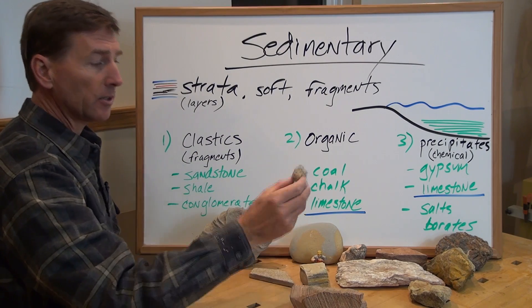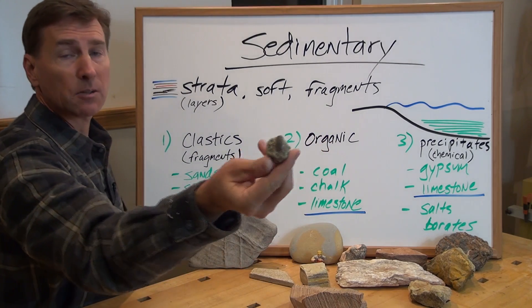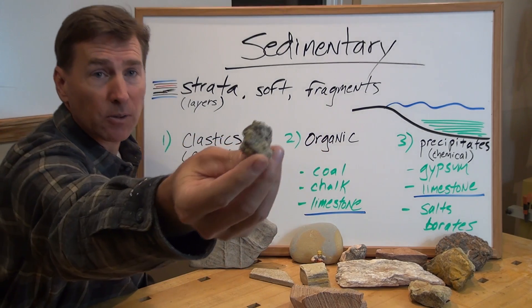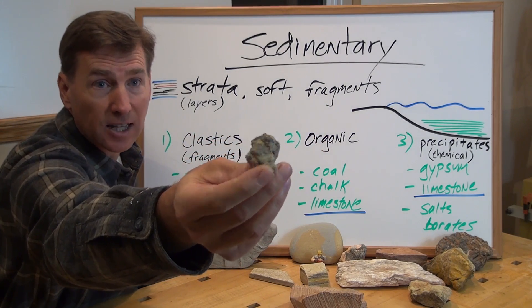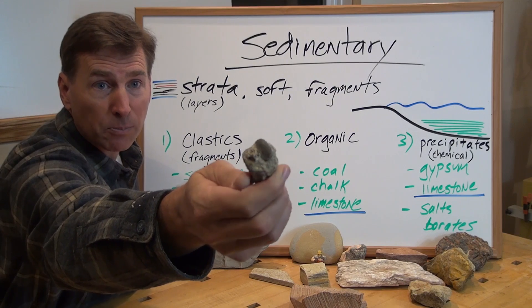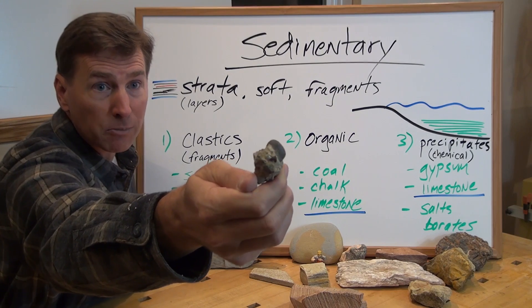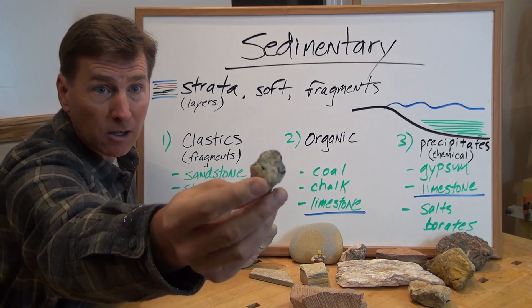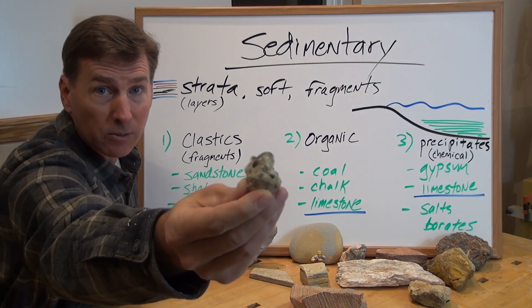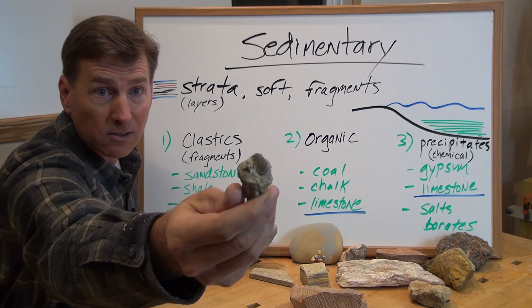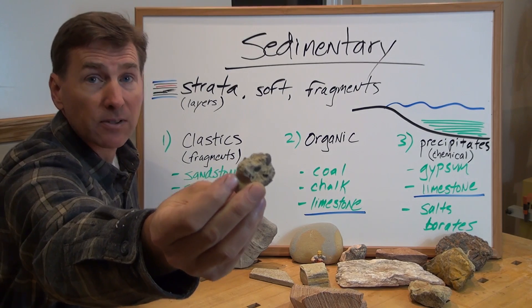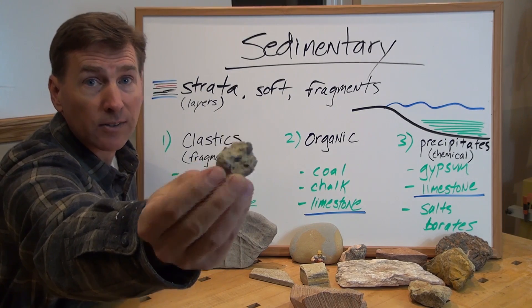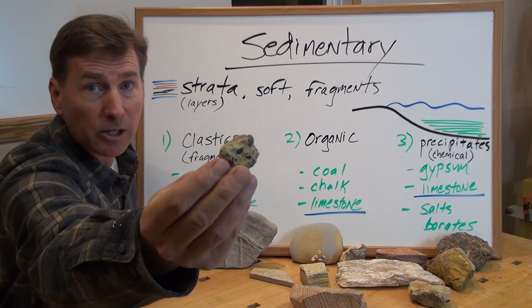Finally, conglomerate — which is a bunch of pebbles that have been welded or cemented together. We pretty much stole from nature when we made concrete, because that's essentially what this is. But this happens in nature as well. That's a conglomerate.